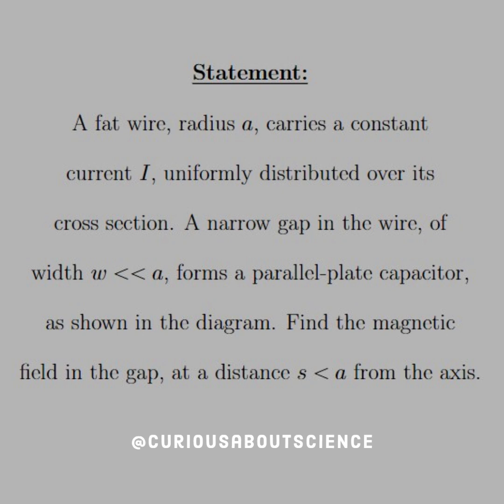The statement reads: A fat wire, radius a, carries a constant current I, uniformly distributed over its cross-section. A narrow gap in the wire of width w, which is much, much less than a, forms a parallel plate capacitor, as shown in the diagram. Find the magnetic field in the gap at a distance s less than a from the axis.